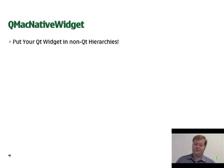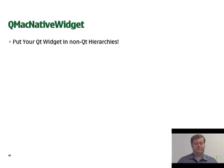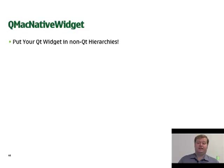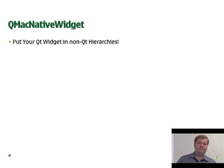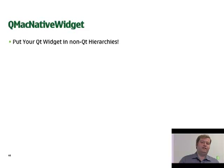The next widget I want to talk about is QMacNativeWidget, which is kind of the exact opposite of QMacCocoaViewContainer. QMacNativeWidget allows you to take a Qt widget and transplant it into a Cocoa or Carbon hierarchy. This can be handy for plugin development, or if you have a window but don't necessarily have a Qt window and you want to put Qt hierarchies in. I will warn you this is an advanced, experts-only class — when you do this you'll have to be doing a lot of the work on your own, but we help you get the Qt hierarchy set up.